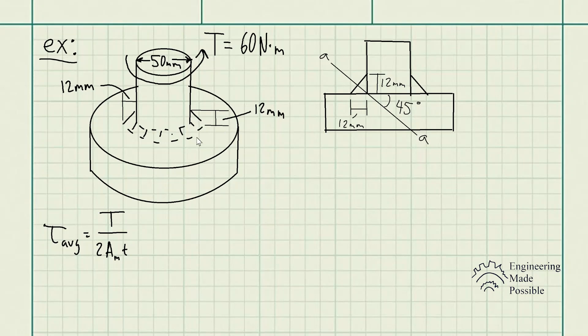to this problem, to a weld, a fillet weld in this case, and not a thin-walled shaft? In this case we have a solid shaft being welded on, but how does this apply to the weld itself? Well, you can actually just imagine the weld being a thin-walled shaft itself.